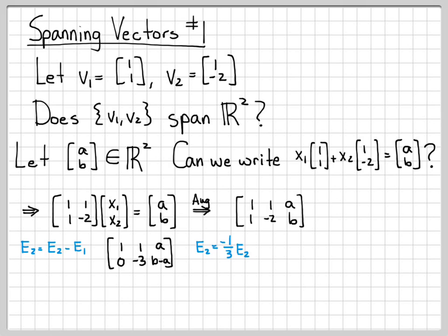If I let E2 equal -⅓E2, multiply every quantity by -⅓, equation 1 will be unchanged. 0 times ⅓ is still 0. -3 times -⅓ is 1. And then we have b minus a times -⅓. The sign changes, so that turns into (a-b)/3.